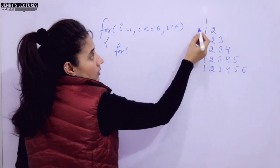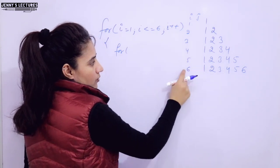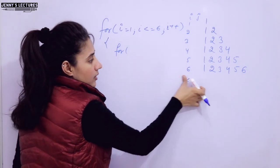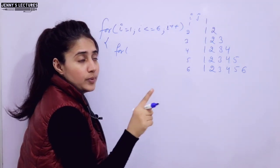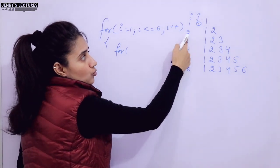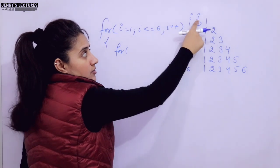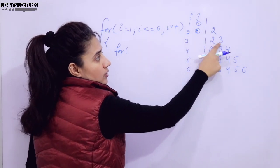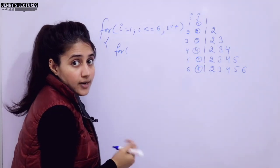When i equals 1 we print the first line, i equals 2 the second, and so on up to i equals 6. The actual printing is done in the inner loop (j loop). When i is 1, j should repeat only one time and print the value 1. When i is 2, j should repeat two times printing two columns. When i is 3, j runs three times, and so on.